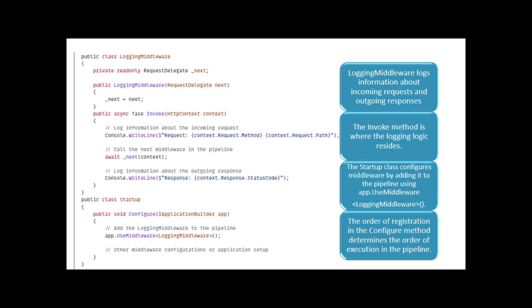Let's discuss an example of middleware — a logging middleware. The logging middleware logs information about incoming requests and outgoing responses. You can see here the logging class, where we are invoking the method and passing the HTTP context. The Invoke method is where the logging logic resides. We have a startup class that configures middleware by adding it to the pipeline using app.UseMiddleware, passing the LoggingMiddleware class. The order of registration in the Configure method determines the order of execution in the pipeline.